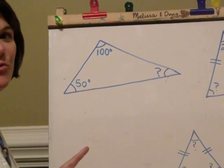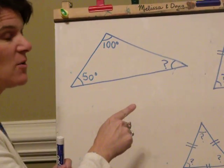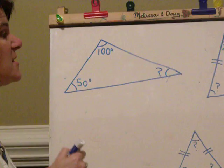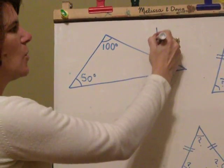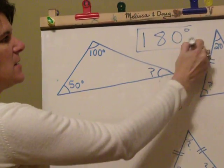Okay, I'm going to show you about three different ways to find missing angles in triangles. And the first thing you need to know is that triangles' angles always add up to 180 degrees.